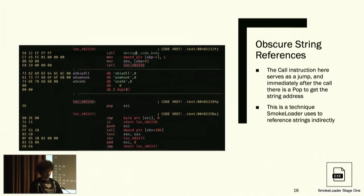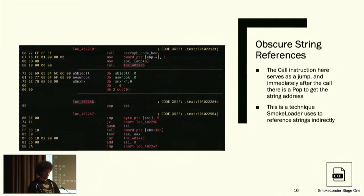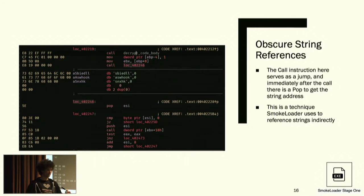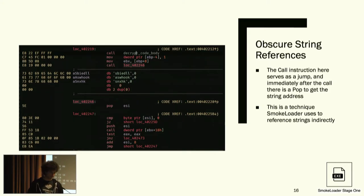Smoke Loader also uses obscure string references. A call instruction to location 0x402246 does a jump past the strings, and immediately after there's a pop into the ESI register. Since a call pushes the following address onto the stack, this gives ESI the address of the SBIE DLL string — a sandboxing tool used for analyzing Windows processes. This is one way they reference strings indirectly, and it also breaks disassembly and IDA Pro's decompiler — another anti-static-analysis technique.